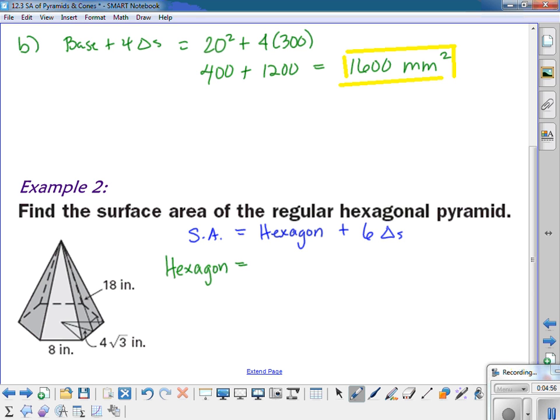So they actually gave me the apothem already. The apothem is 4 root 3. And if the sides are 8 inches, then the perimeter is 8 times 6, or 48 inches. So I'm going to go ahead and use one-half PA on this one. So one-half of 48 times the apothem of 4 root 3. And that comes out to approximately 166.28.